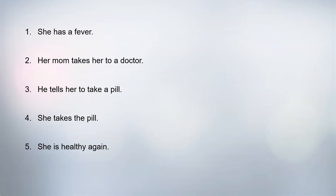Now we have five unscrambled sentences. Using these, let us practice reading together. She has a fever. She has — and then 'a' — she has a fever.